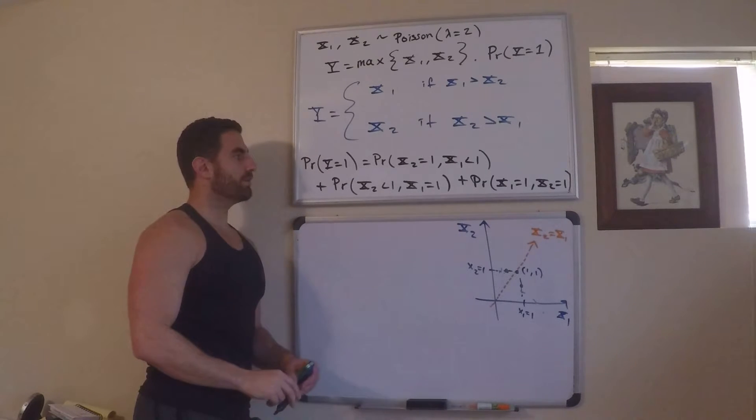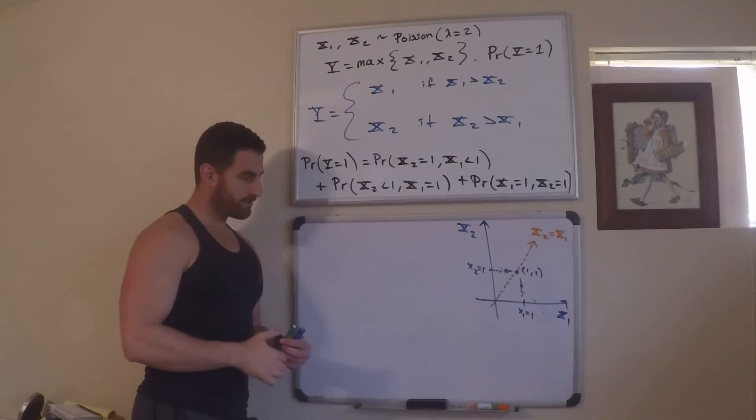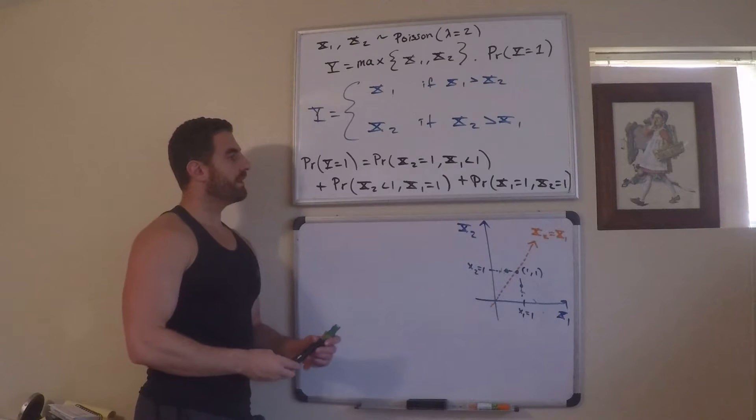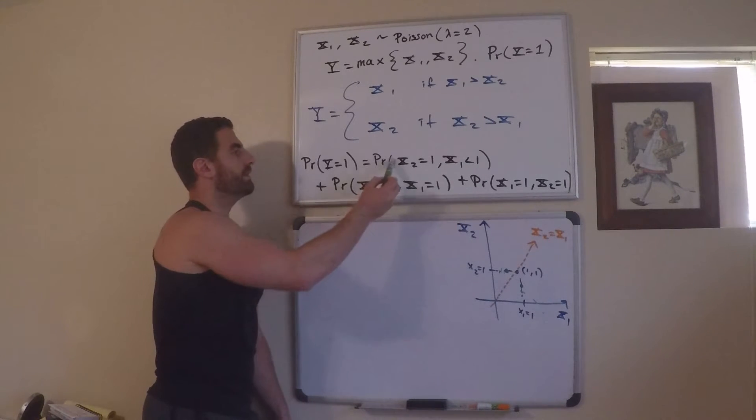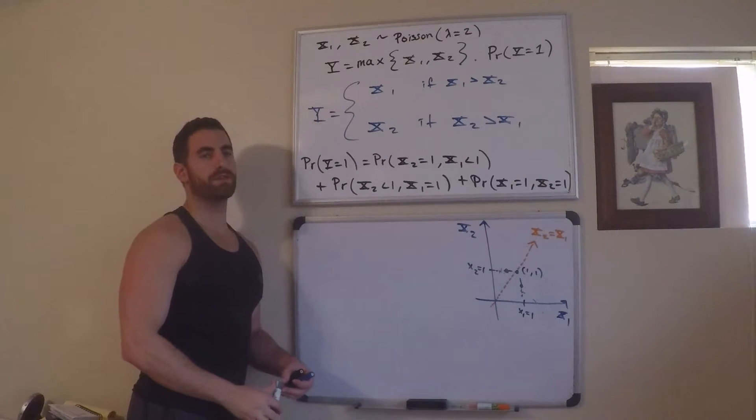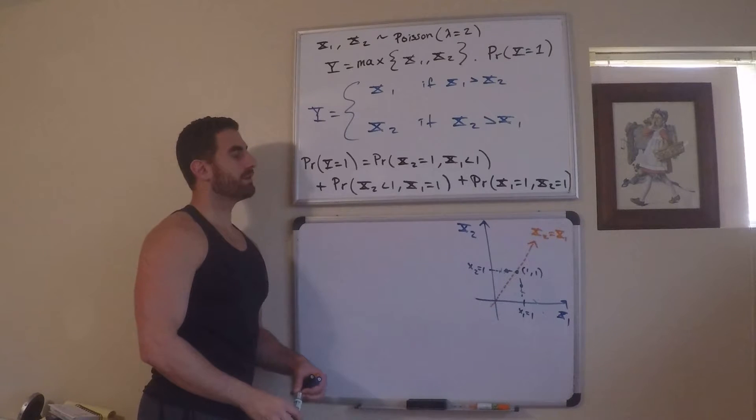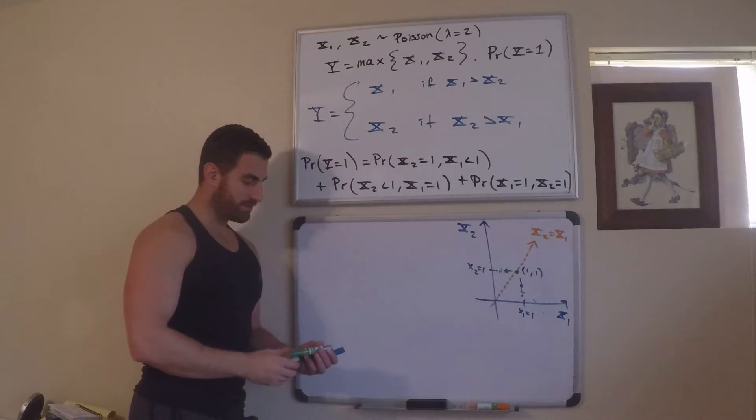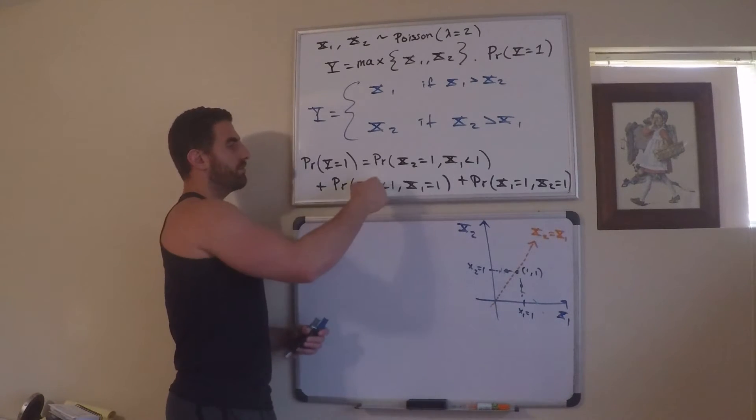Now, if you think about this once more, there's a couple of things you can say here. Number one, that these two quantities right here, these are going to be equal. Because x1 and x2 are identically distributed, they're also independent. So, hopefully you can see what I'm going to say next. Okay, so I'm going to clean this up a little bit. As I mentioned, these two quantities are equal.